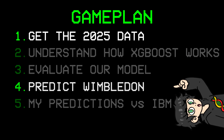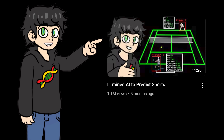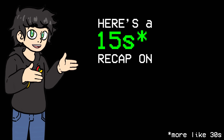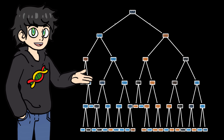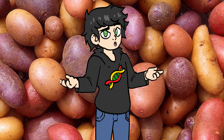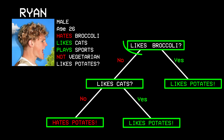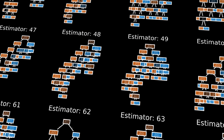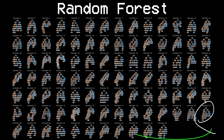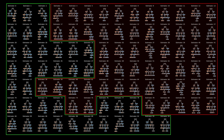Before we predict Wimbledon, you need to understand how XGBoost works. Here's a 15-second recap on decision trees and random forest. A decision tree works by asking a series of yes and no questions, each one chosen to split the data in the most useful way until it reaches a final prediction. But one tree can be unstable, so random forest builds a bunch of trees on random subsets of data and features, then combines their votes for a stronger, more reliable result.